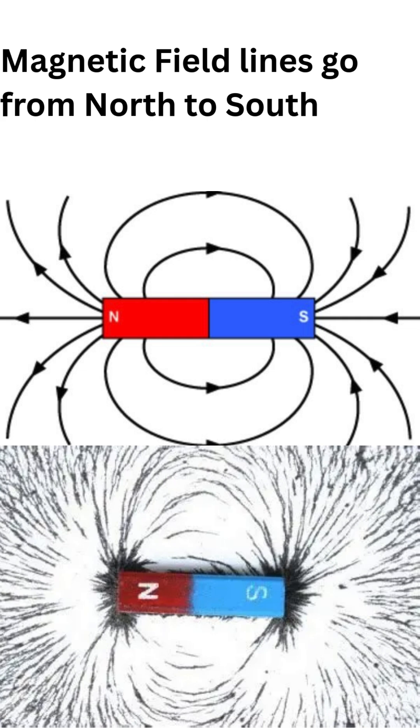Magnetism is an invisible force that can pull certain metals like iron and nickel towards a magnet. A magnetic field is the invisible area around a magnet where its power can be felt.